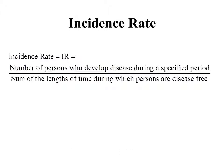Our next concept is the incidence rate, abbreviated IR. Incidence rate is similar to cumulative incidence but more complicated. The definition is: the number of persons who develop a disease during a specified period divided by the sum of the lengths of time during which the persons are disease-free. The numerator is the same as for cumulative incidence, but the denominator is the sum of disease-free time for each person, not just the total count at baseline.